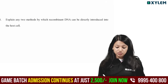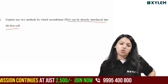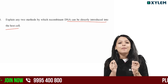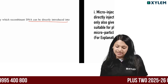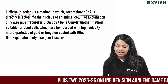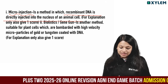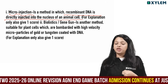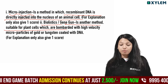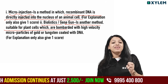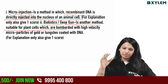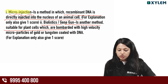Explain the two methods by which recombinant DNA can be directly introduced into the host cell. Microinjection is the best method — a method in which recombinant DNA is directly injected into the nucleus of the host cell. And biolistics, also called the gene gun, is another method suitable for plant cells, in which cells are bombarded with high velocity microparticles coated with gold and tungsten DNA.